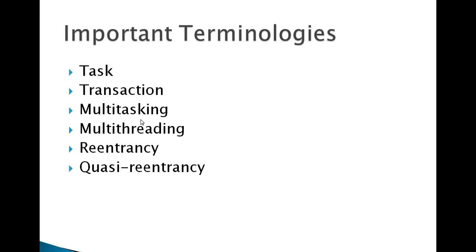You have programs called mini balance, withdrawal, and balance inquiry — three different programs. ATM1, ATM2, ATM3 — four different users trying to access minimum balance. Either they can share the same program — minimum balance — or they can access withdrawal or mini statement. Anything is possible. That's the reason we call it multitasking. Coming to multithreading, it is also a similar thing, but here the same copy of the program is being shared with different users, meaning the same program is being shared by multiple users and used by them.